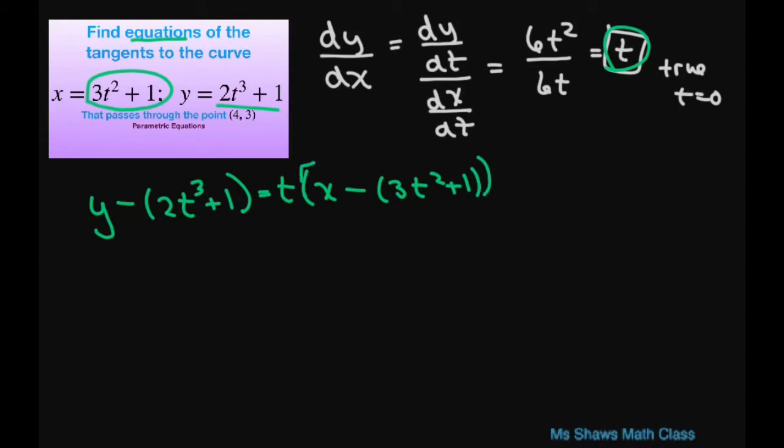Now that you have that part we're going to substitute in our 4 comma 3, that point. So substituting that in we're going to have 3 for our y minus 2t cubed plus 1 equals t times 4 minus 3t squared plus 1.